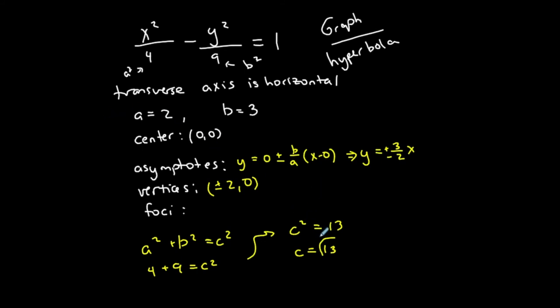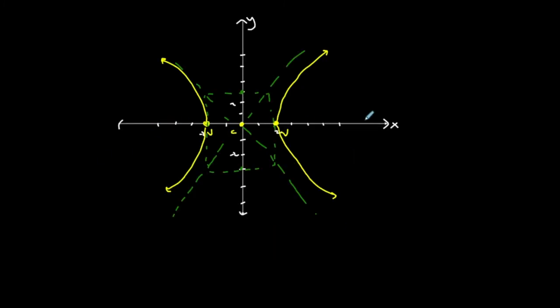And the foci exists on the transverse axis within these parabolas, within these curves that represent my hyperbola. So I'm counting square root of 13 units, which is a little more than 3, or in between 3 and 4, to the right and to the left. So that 1, 2, 3-ish, approximately here is one focus.